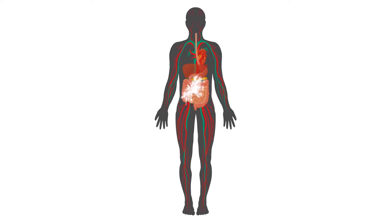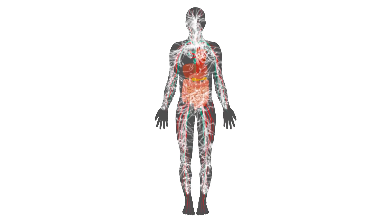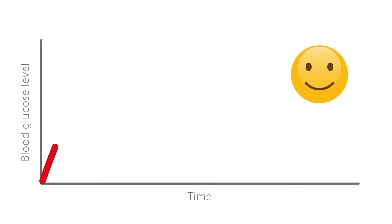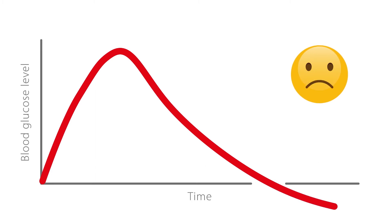The faster they are broken down and absorbed, the faster and higher our blood glucose level will rise. But the higher and faster this rise, the faster and lower the drop will be. Some people know this as the sugar crash.